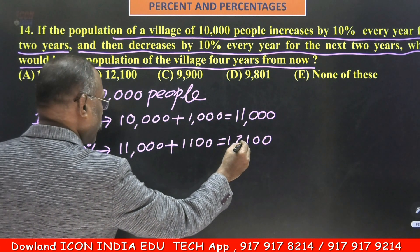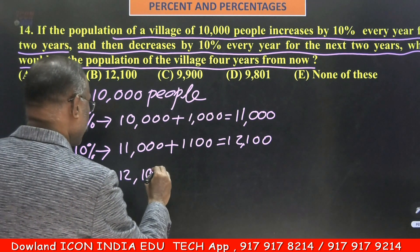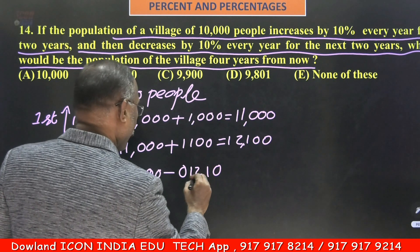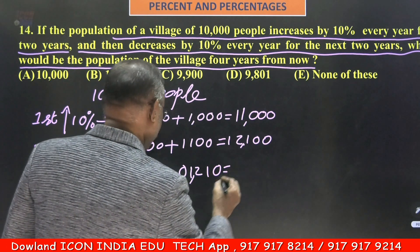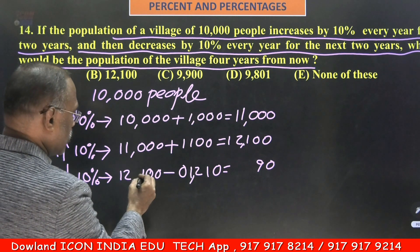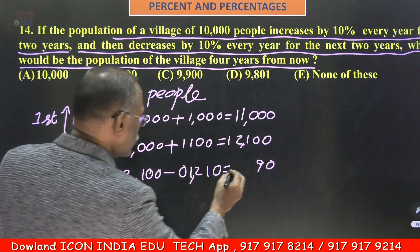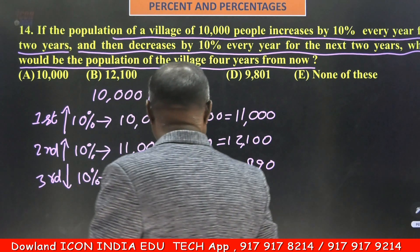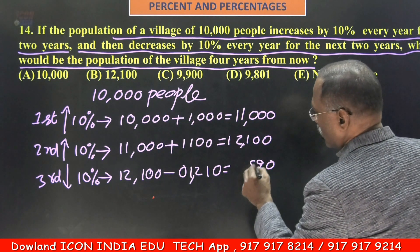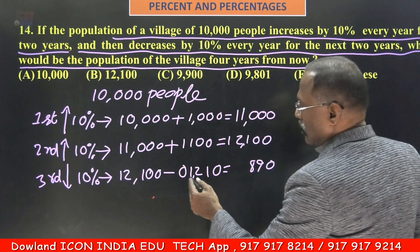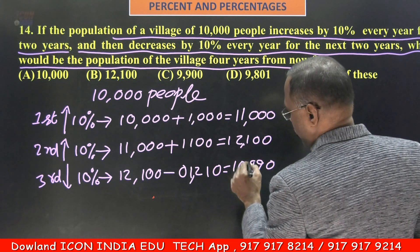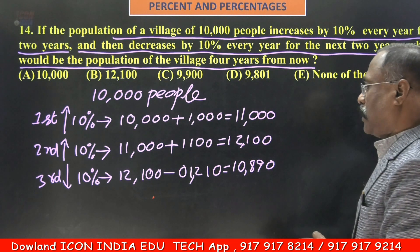12,100 minus 10% of 12,100. 10% of 12,100 is 1,210. Subtracting: 12,100 minus 1,210. Working through the subtraction — 0, then 10 minus 1 is 9, then 10 minus 2 is 8 — gives 10,890. So 10,890 is the population at the end of the 3rd year.